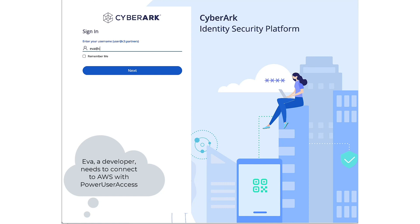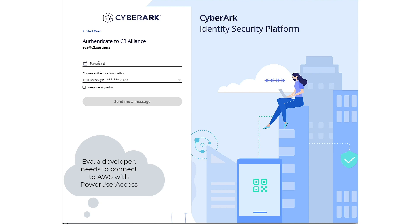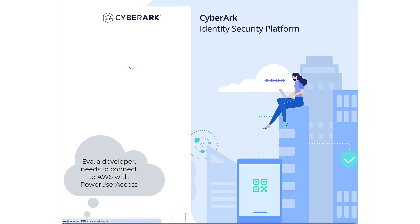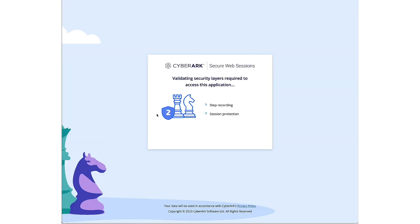In this video we will show you how Eva, a developer, can request access to her AWS account using ServiceNow. First, she connects to the Cyborg identity security platform using strong multi-factor authentication. After connecting to the platform, she selects the AWS account she wants to connect to. As you can see, the session is being initiated by Cyborg secure.